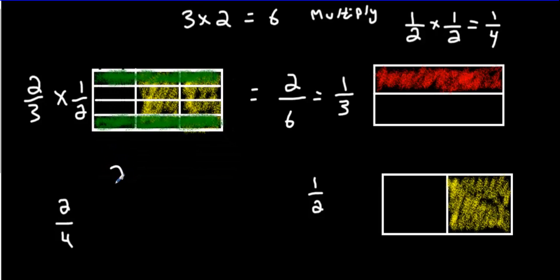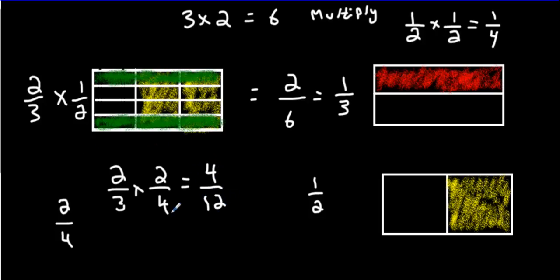So we had two thirds multiplied by two fourths. And our answer is going to be — let's see — how many have overlapping colors? This one has two colors, and this one, and this one, and this one. So we have four over 12. Now look at the pattern: two times two is four, three times four is 12. That's how you multiply fractions — you just go across. Multiply the numerators and multiply the denominators, and you get an answer. You can reduce it then — divide each by four and you're going to get one out of three.